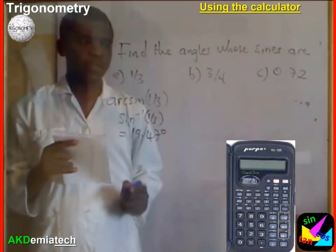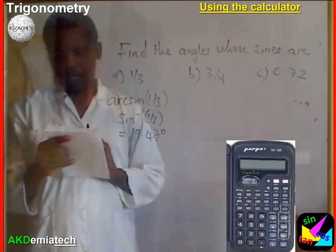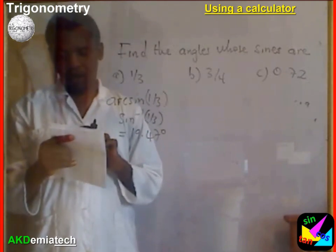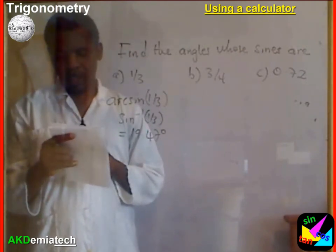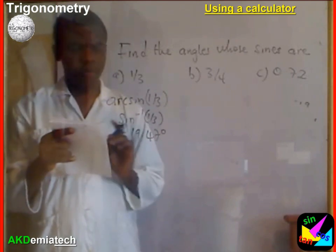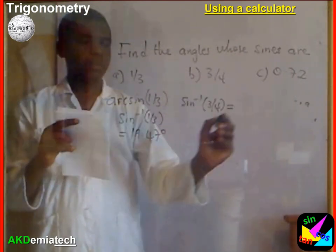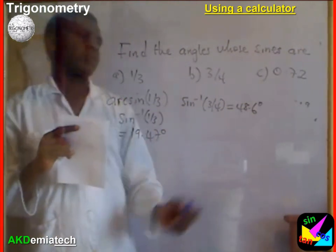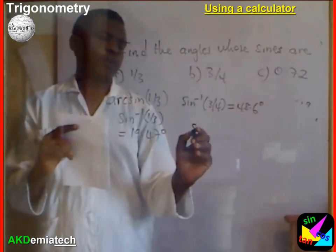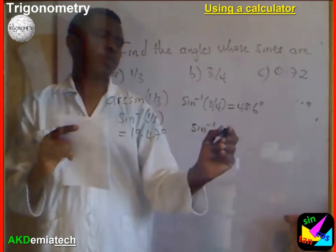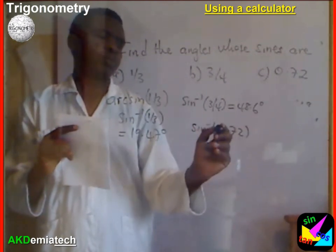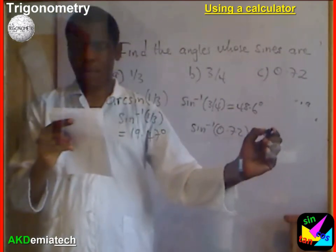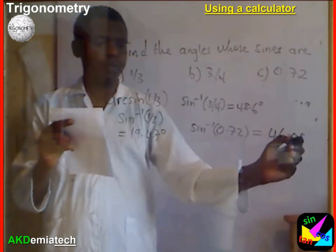For the second one, I'll take three-quarters, enter the second function, and punch sine inverse. This gives me 48.6 degrees. Then sine inverse of 0.72 — I punch it on my calculator — gives 46.05 degrees.